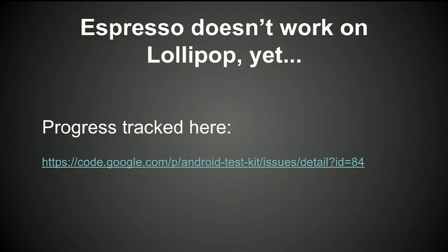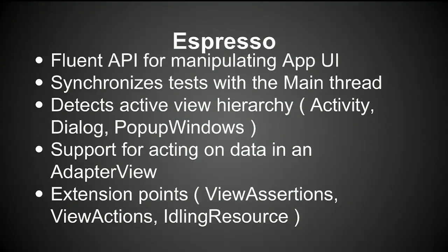It doesn't have 100% support for Lollipop yet, but that's coming soon. So why Espresso? It's a fluent API which makes test code readable and more maintainable. But really, the key thing Espresso gives you is synchronization: your tests run on the instrumentation thread, while all app code runs on the main UI thread. Espresso has a lot of mechanisms to synchronize between those two threads, which can remove a huge level of flakiness. If you're doing UI tests on Android, you need something to synchronize between your instrumentation test and the main thread, and Espresso is very effective at that.